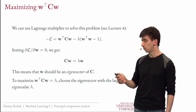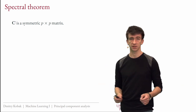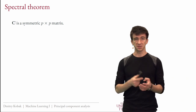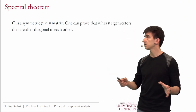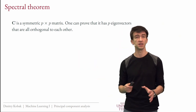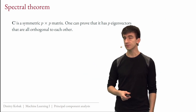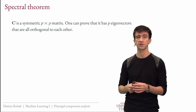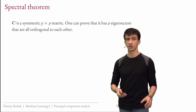Let me spend a few minutes on eigenvectors and eigenvalues of covariance matrices more generally. A covariance matrix is a symmetric square matrix with real entries. One can prove that any such matrix has p eigenvectors, and you can choose them so they are all orthogonal to each other. It's easy to prove that if two eigenvectors have different eigenvalues, they must be orthogonal — that's an exercise for you.